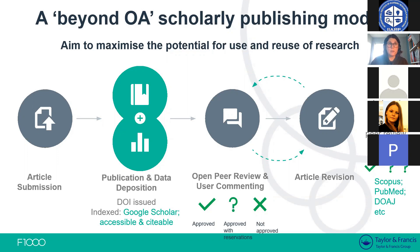Once an article has been submitted and has passed all our pre-publication checks and is set to a standard that can be published, we will then publish the article online — that can happen as quickly as two weeks, depending on how complex the article is and how busy production are. At that point, any data associated with the article should also be made available in an online repository, and a DOI would be issued with the publication.